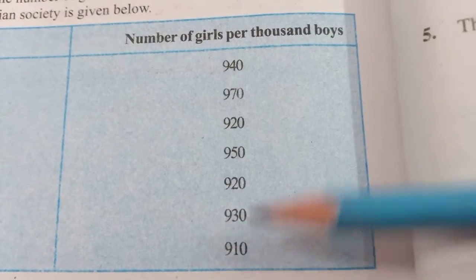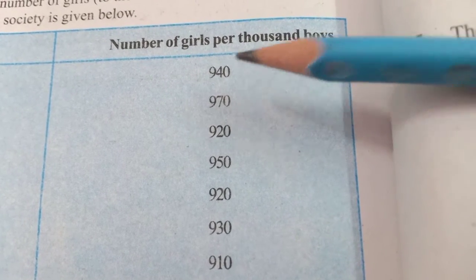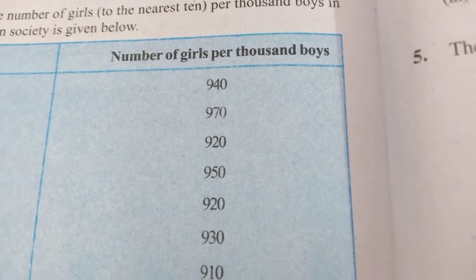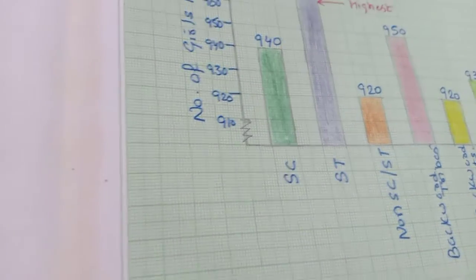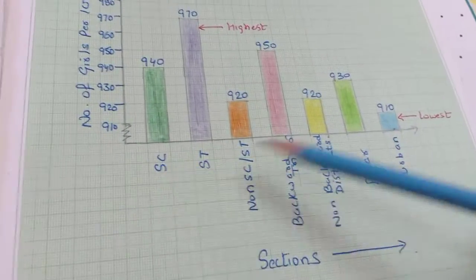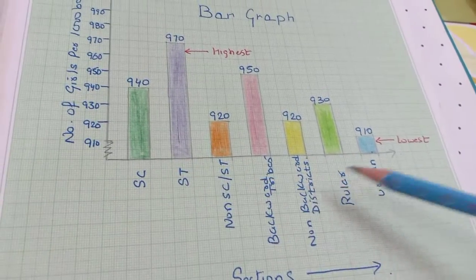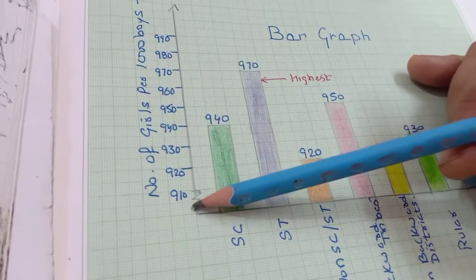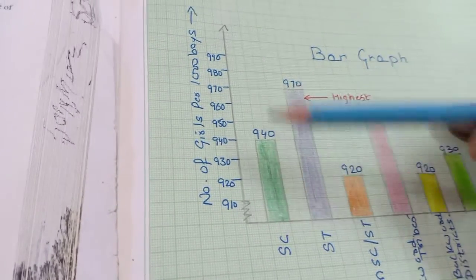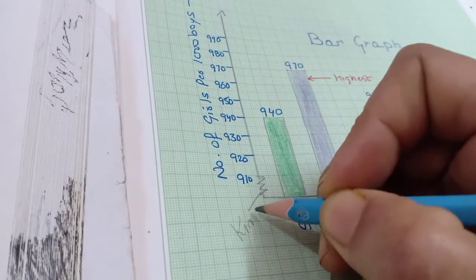Values हैं 940, 970, 920, 950, 920, 930, 910 — अगर मैं 100 का gap बनाऊं तो सारी length of bars equal लगेंगी। इससे बचने के लिए और graph को attractive बनाने के लिए हम kink का use करेंगे। Kink — k-i-n-k — जब unbroken data न हो तो हम kink use करते हैं। हमारा data 900 से start होकर 970 तक जा रहा है, तो यहाँ पर kink start किया — kink हमारी broken series को show करता है।